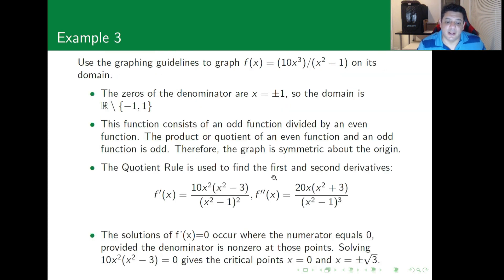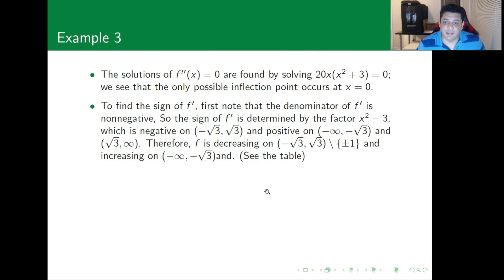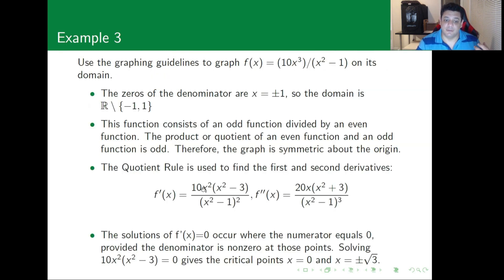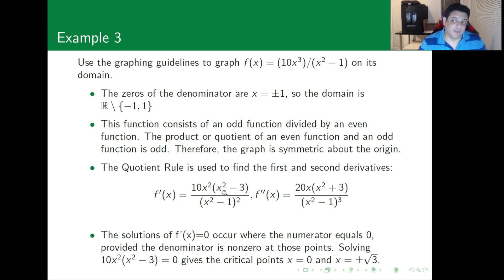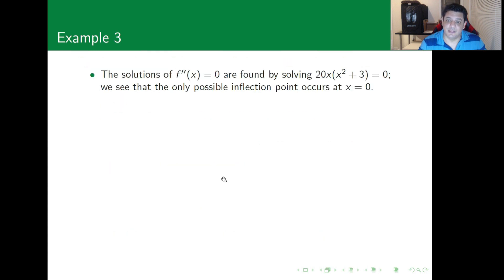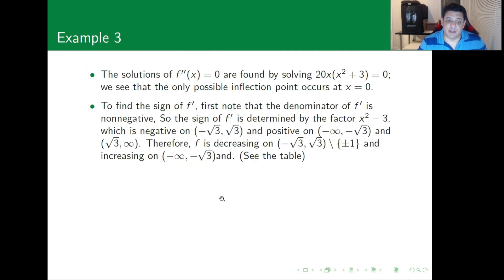The sign of the first derivative is governed by the factor x²(x² - 3). Since x² is always positive, it doesn't affect the sign. So we only need to check the sign of x² - 3 — whether it's positive or negative — to determine the overall behavior.